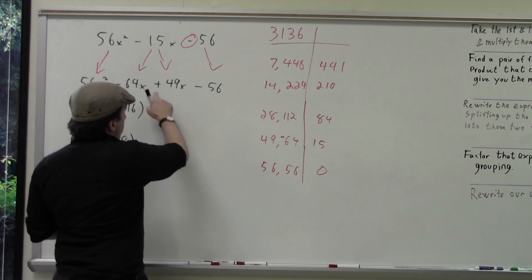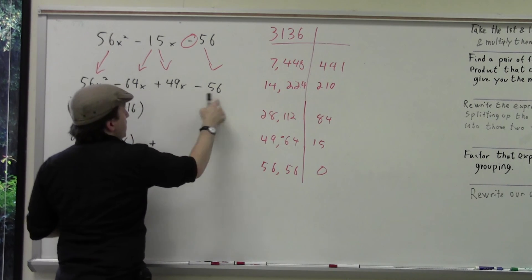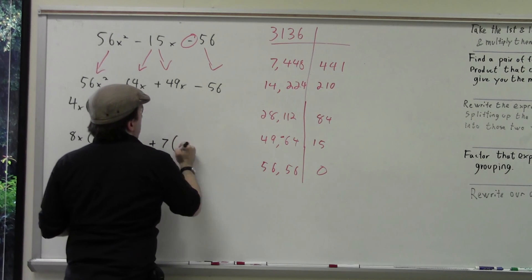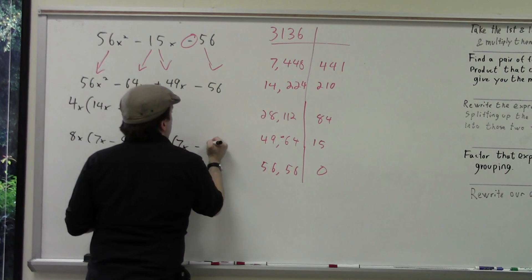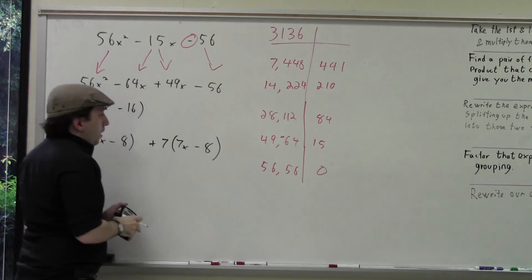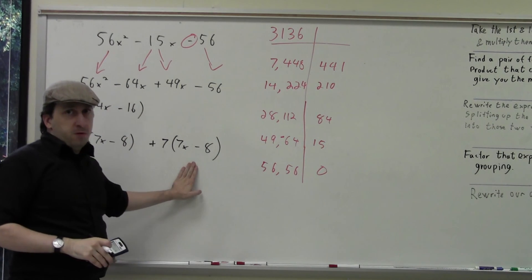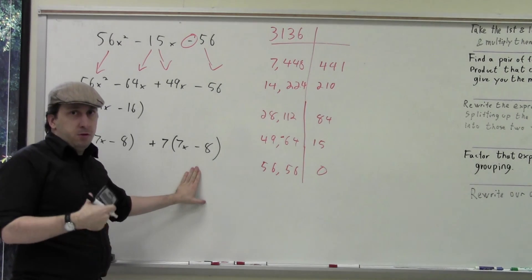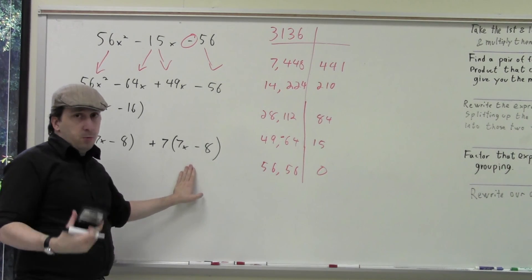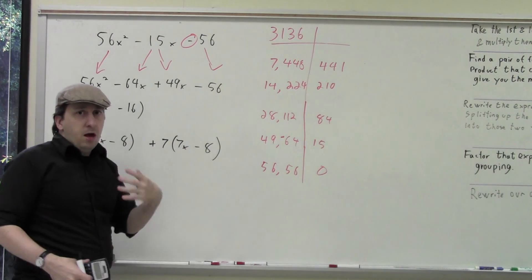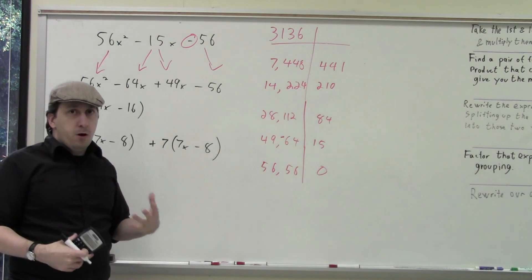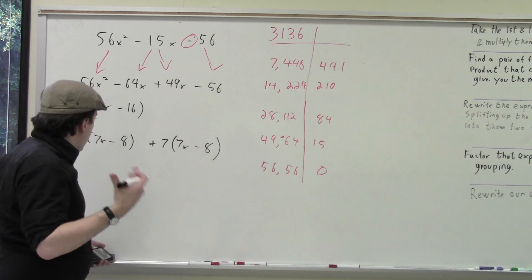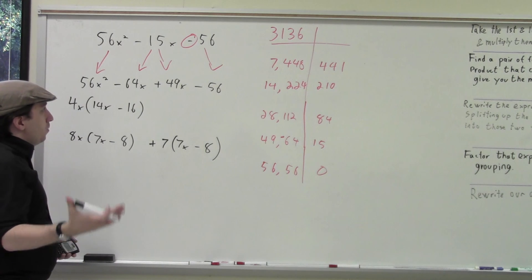When I factor out that 2, I multiply it into the front, leaving me with 7x minus 8. Now I know that part of the factorization is done because those two terms don't have anything in common. Looking at the second group, both terms are divisible by 7. When I factor out 7, I get 7x minus 8. I know I've found the greatest common factor because these are relatively prime, and I know I've done it right because both binomials match. As you deal with bigger numbers, be more careful — it's easier to make mistakes. Now we're ready to write our final answer.